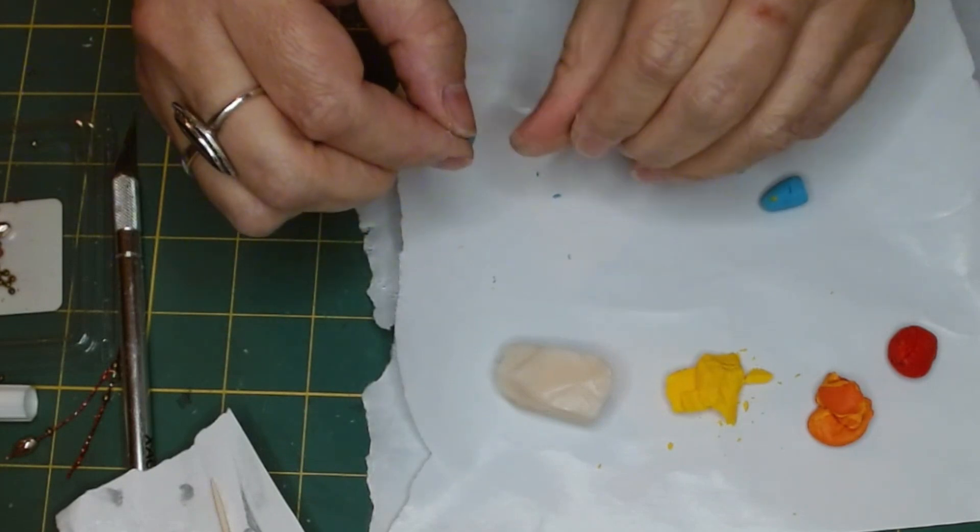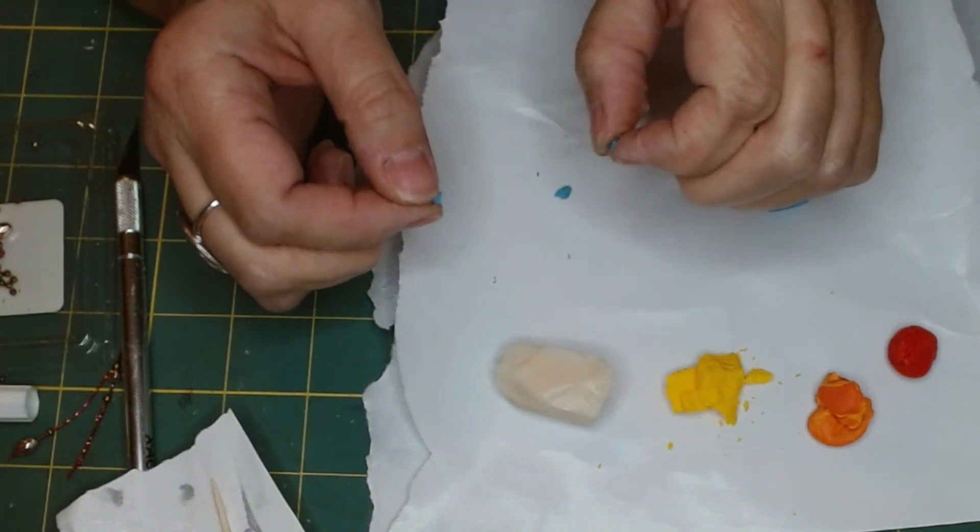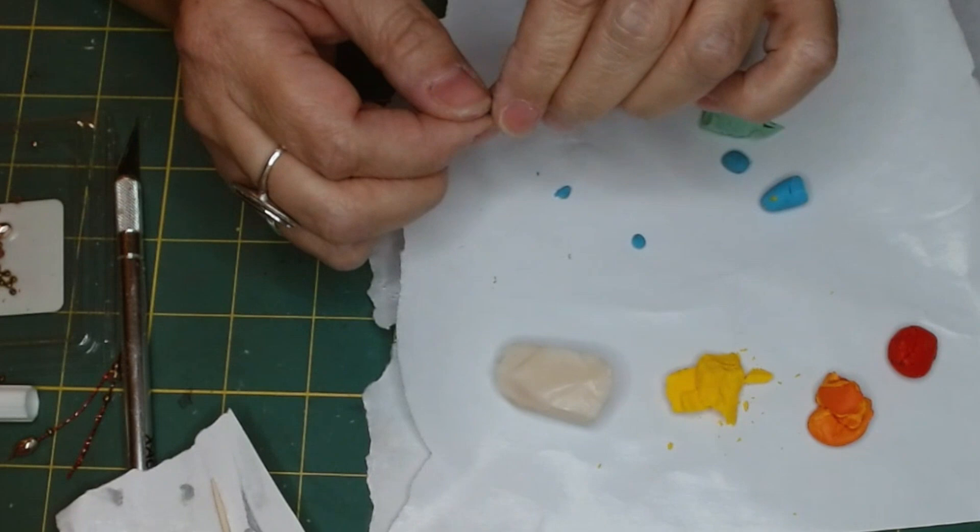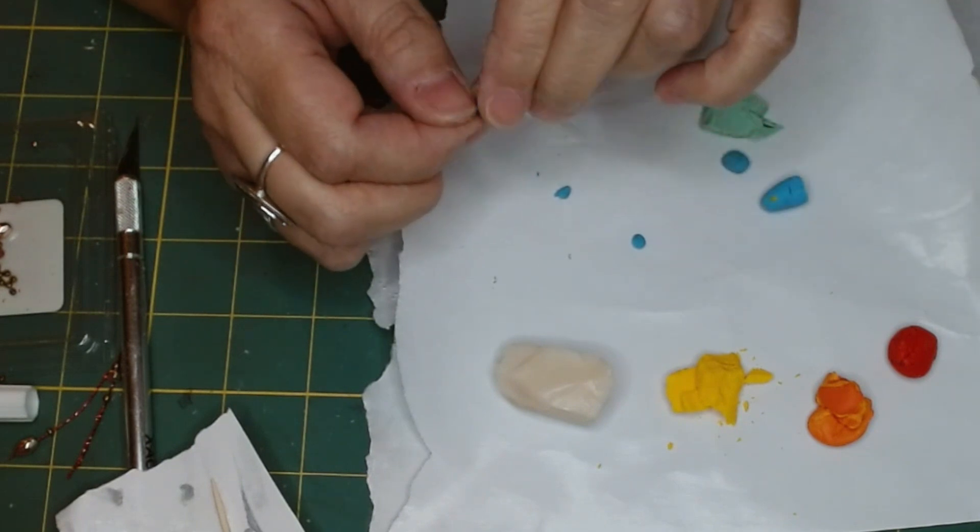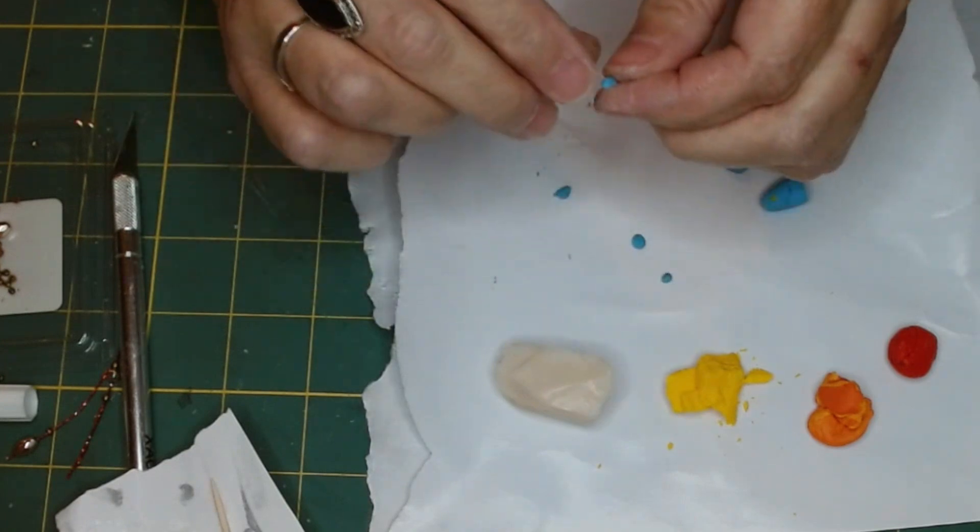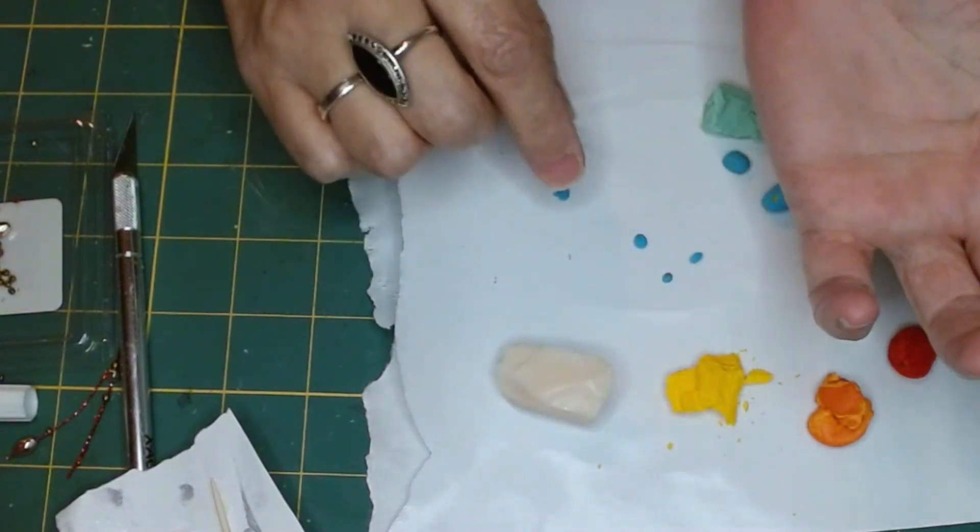To begin with, I'm just taking tiny bits of the clay. I'm going to make a few of each color. And I'm just going to roll them into an egg shape. And then at one end, I'm going to roll it a little more pointy than the other end. And I'm just going to work them into a shape that I'm happy with.